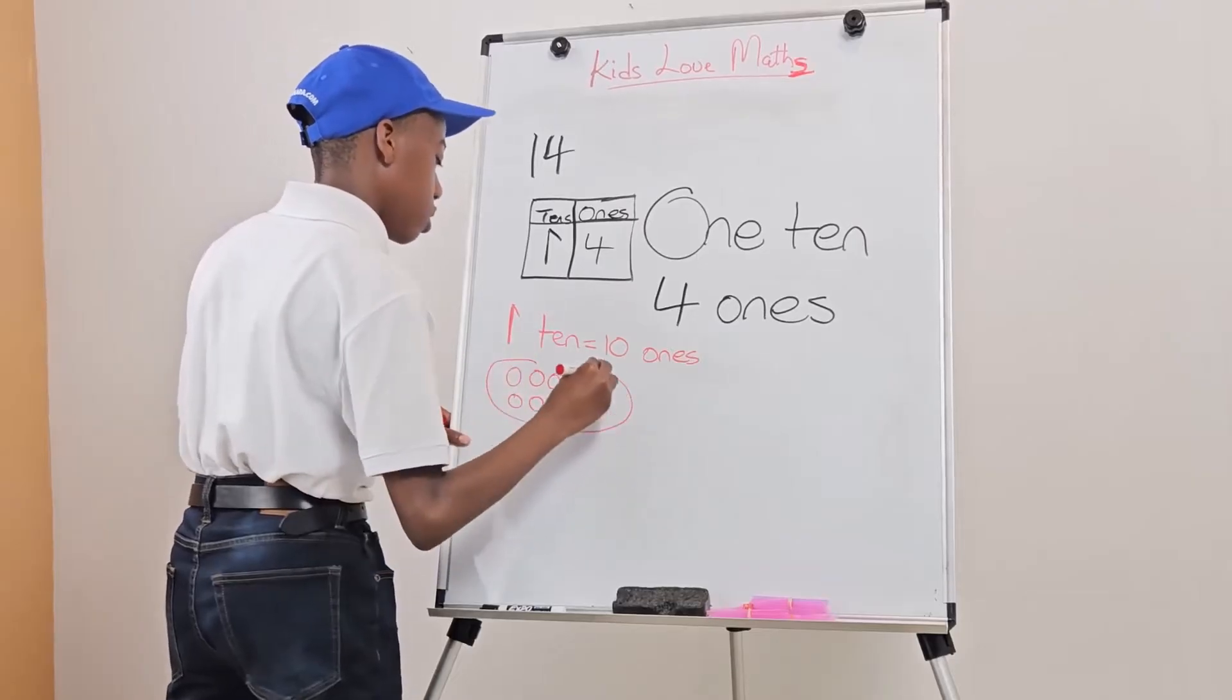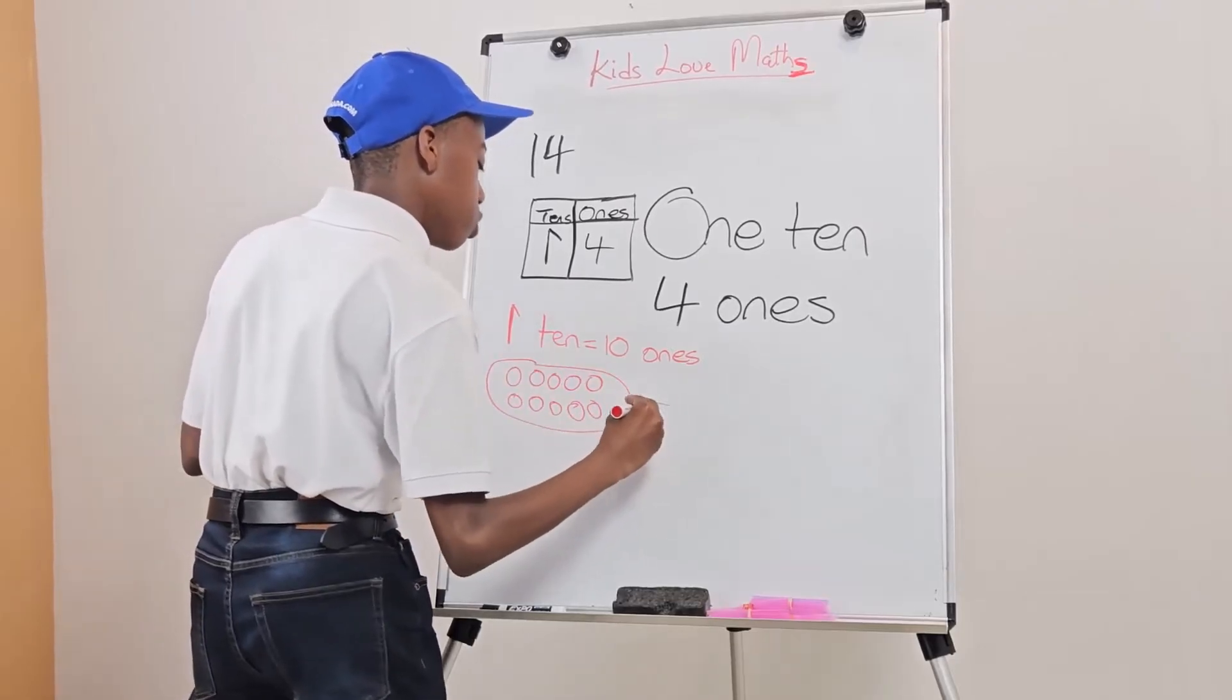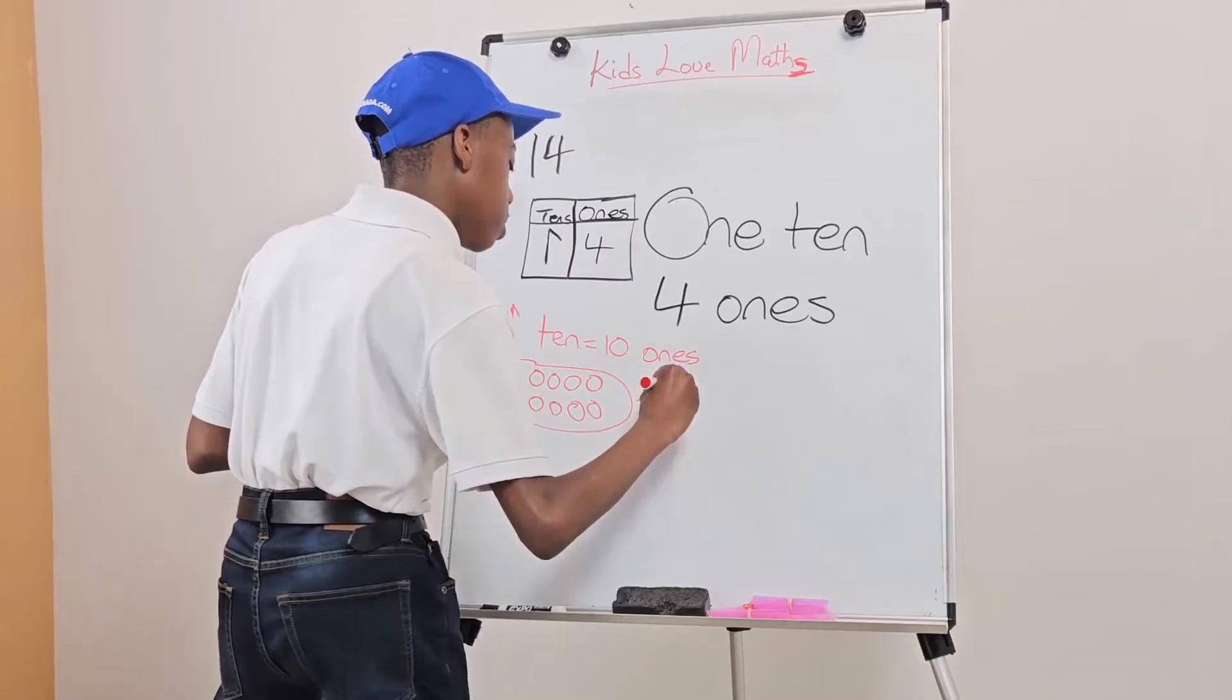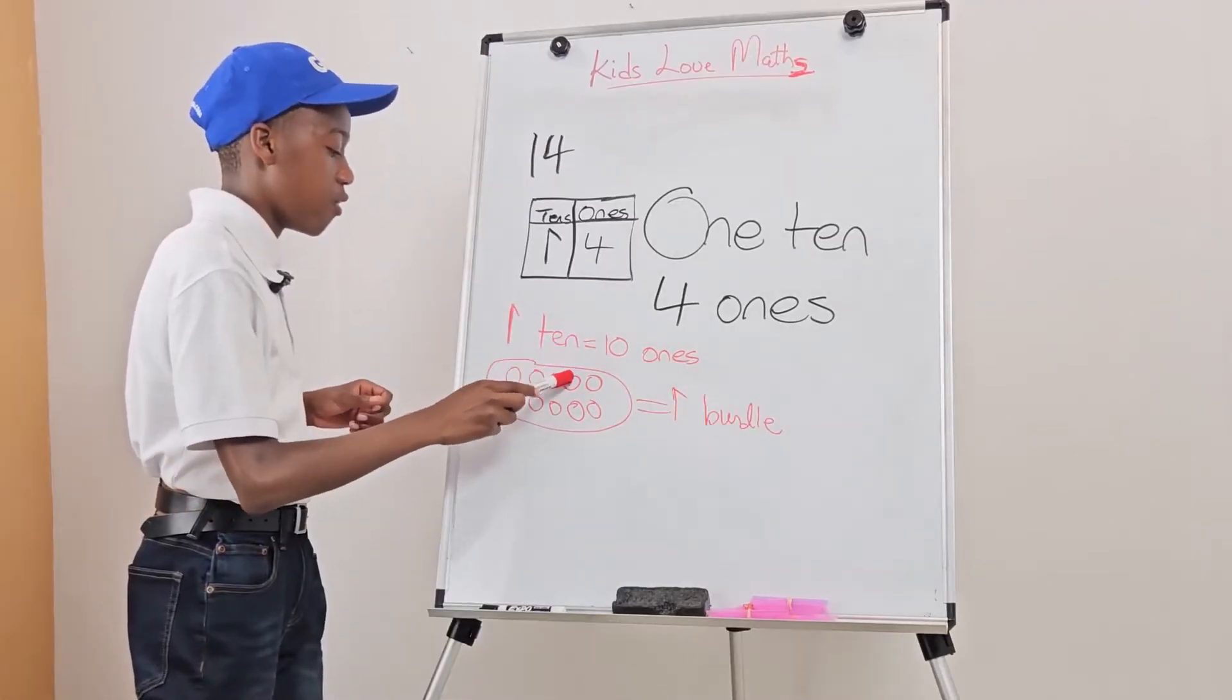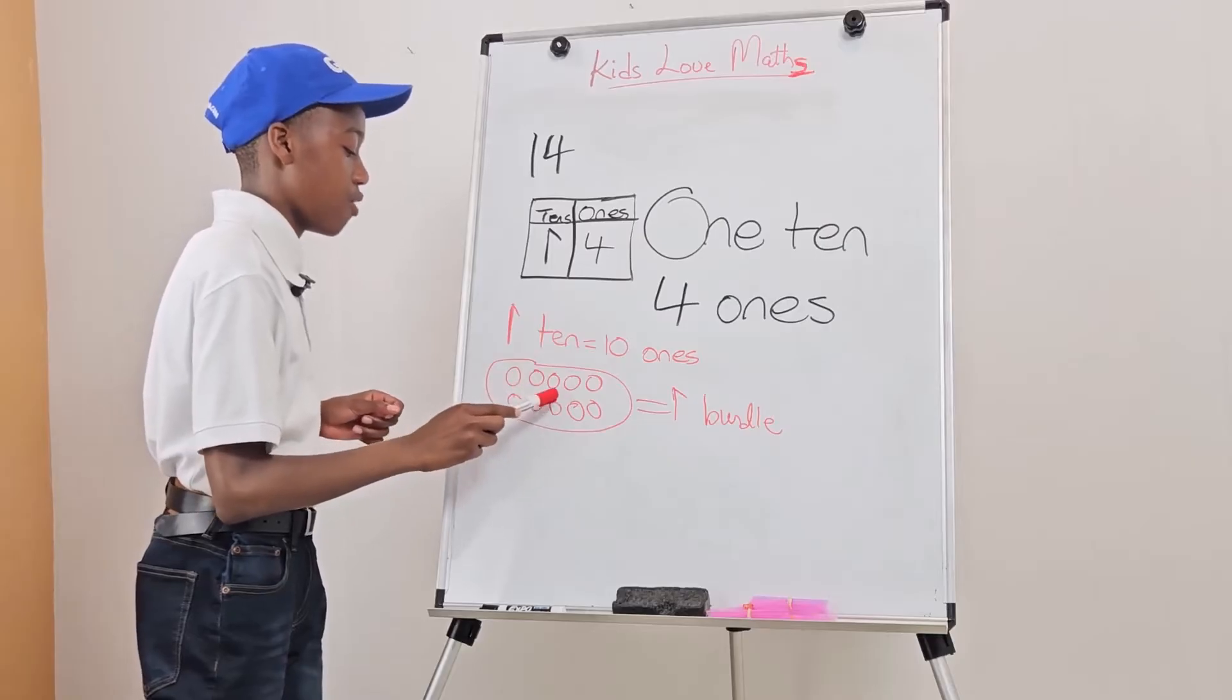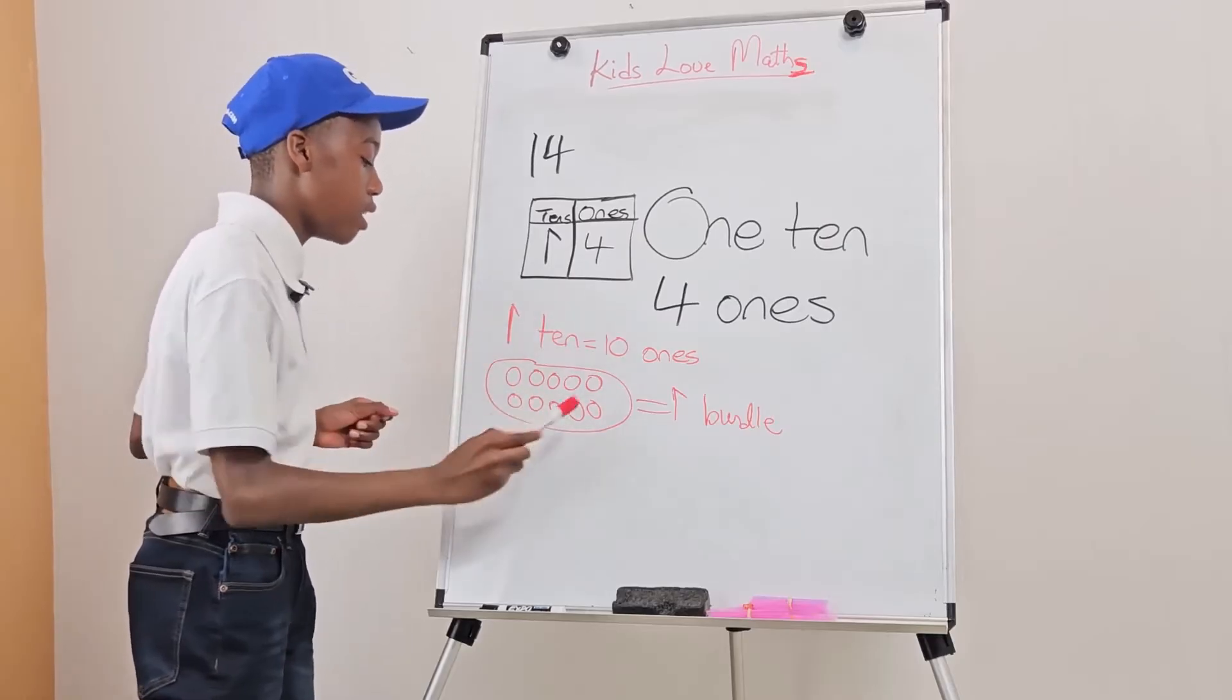10 ones equals to 1 bundle. 1, 2, 3, 4, 5, 6, 7, 8, 9, and 10. 10 ones.